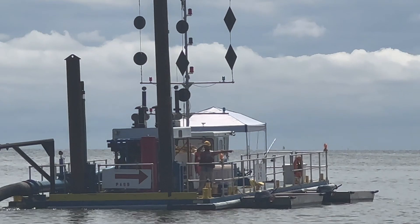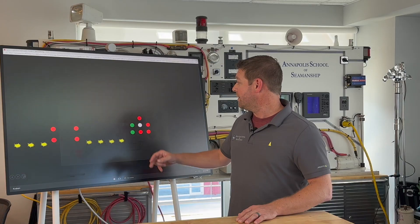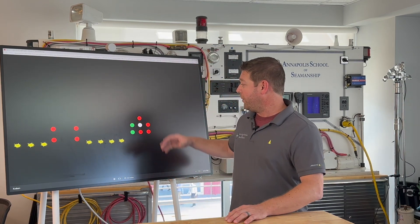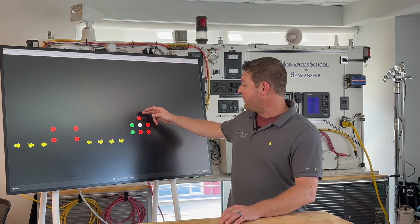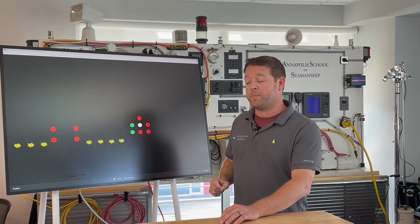Let's take a look and see what you're going to see at night. We've got a lot more going on here. Now we've replaced the day shapes with lights. To replace the ball-diamond-ball, we have red-white-red. To replace the two black balls, the not-safe side to approach and pass on, is the two all-around red lights.